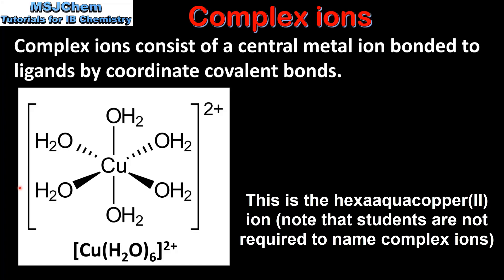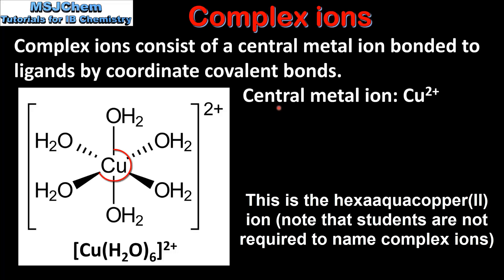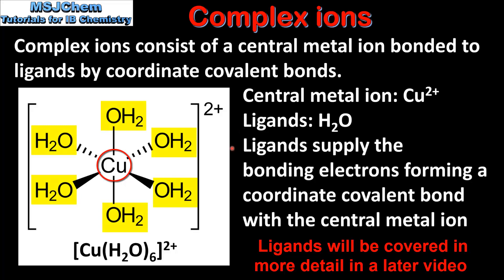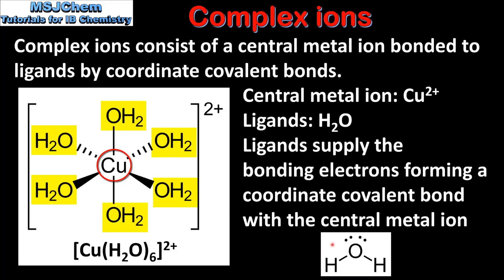On the left we can see a diagram of a complex ion. The central metal ion is the copper 2+ ion. The ligands are water molecules. The ligands supply the bonding electrons, forming a coordinate covalent bond with the central metal ion. Here we can see the Lewis structure of a water molecule. There are two lone pairs of electrons on the oxygen atom. The water molecule uses one of these lone pairs of electrons to form a coordinate covalent bond with the central metal ion.